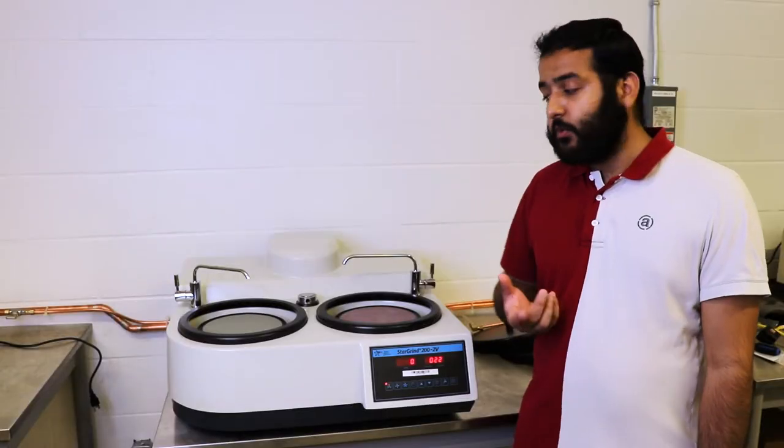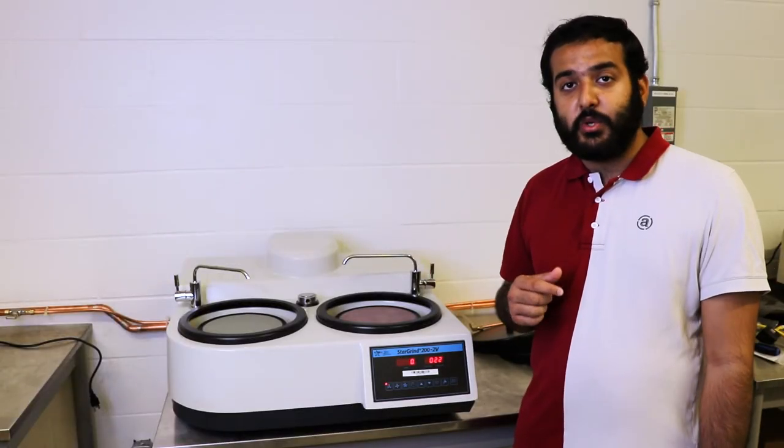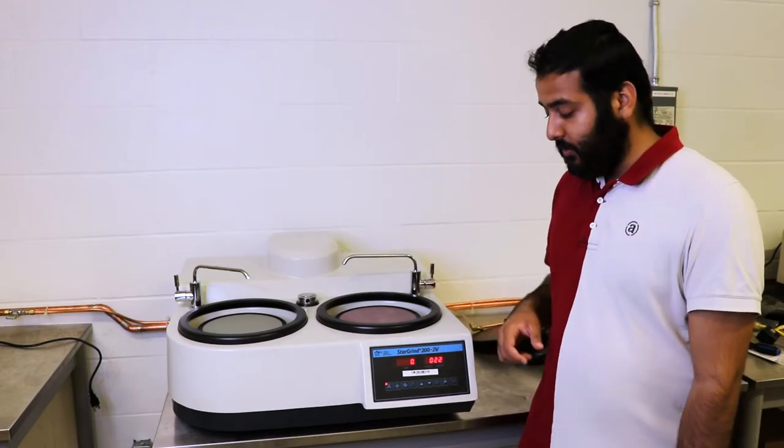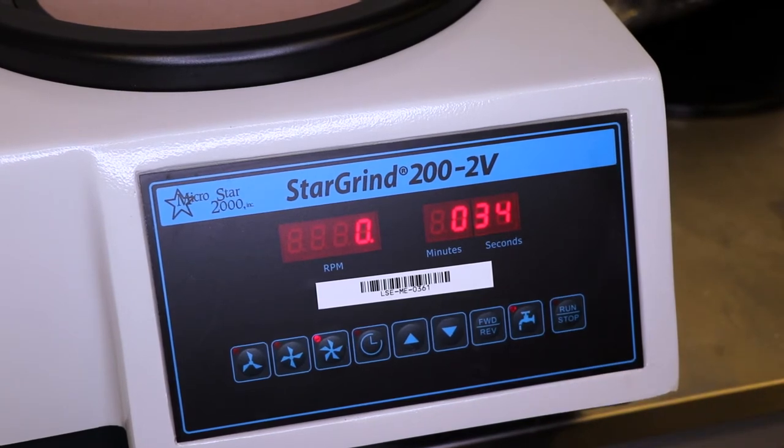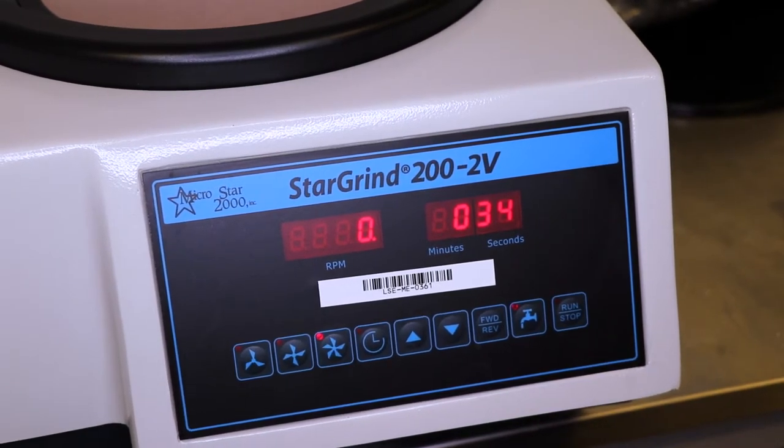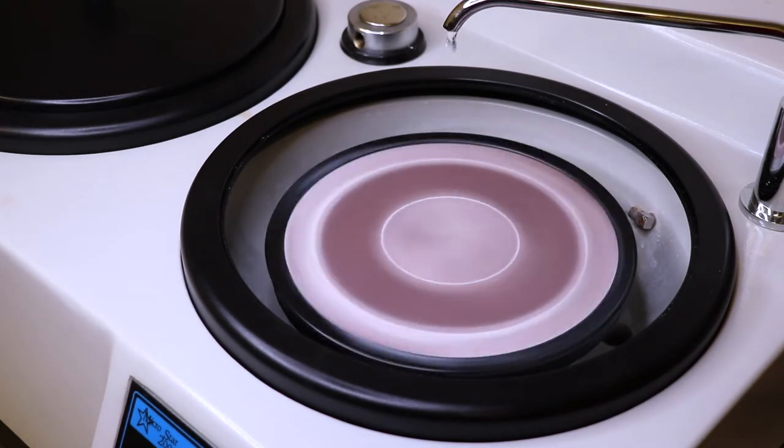If you notice there's a lot of buildup and debris, you can run a clean cycle, which is essentially when you're running the machine, you press this little fountain button on the console. This will run water internally to try to clean up as much of the gunk inside.